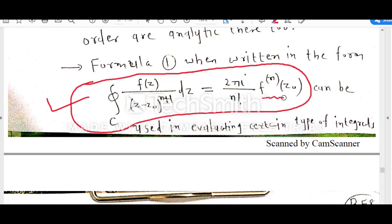Keep in mind: if the power of z minus z₀ is n plus 1, then we have to go up to the nth derivative of function f. If the power is n, we go up to the (n−1)th derivative, with 2πi upon n factorial. You must know how to find the derivative of f(z) up to nth order.